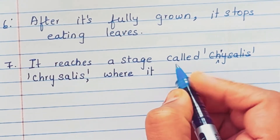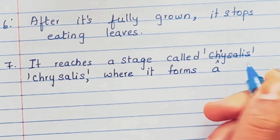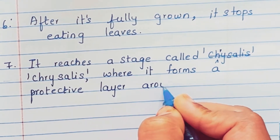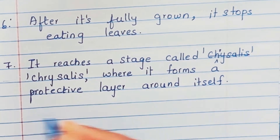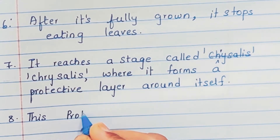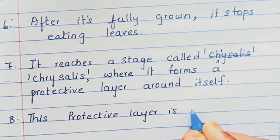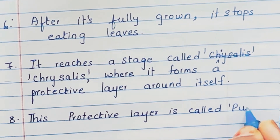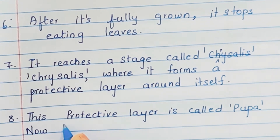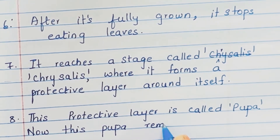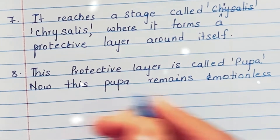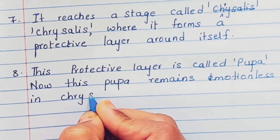Seventh point: where it forms a protective layer around itself. Eighth point: this protective layer is called pupa. Now this pupa remains motionless in chrysalis.